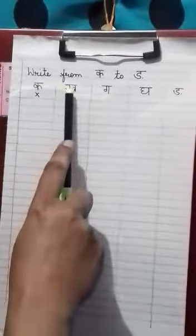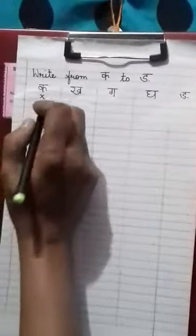Now, in your Hindi exercise book, you have to write ka, kha, ga, gha, anga. I am going to show you how to write. You write the first line, leave one line.